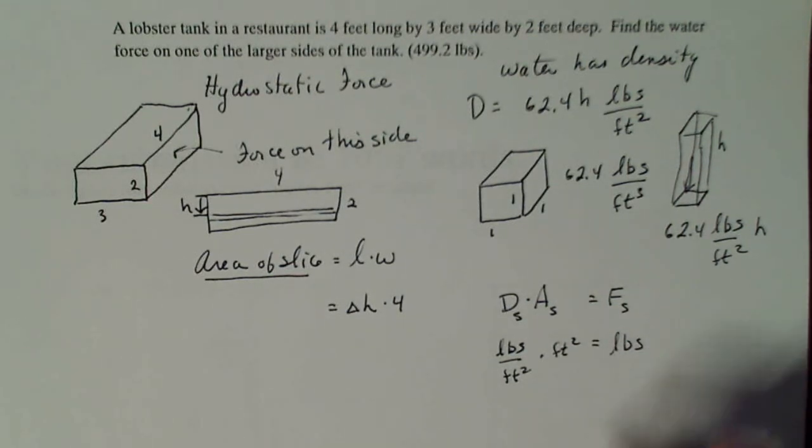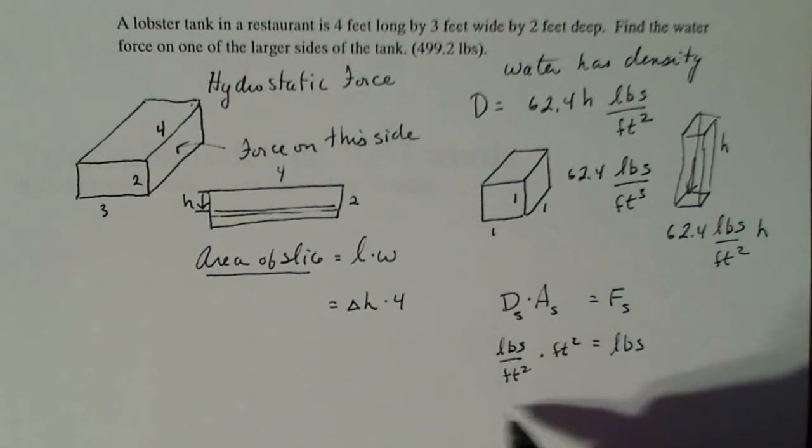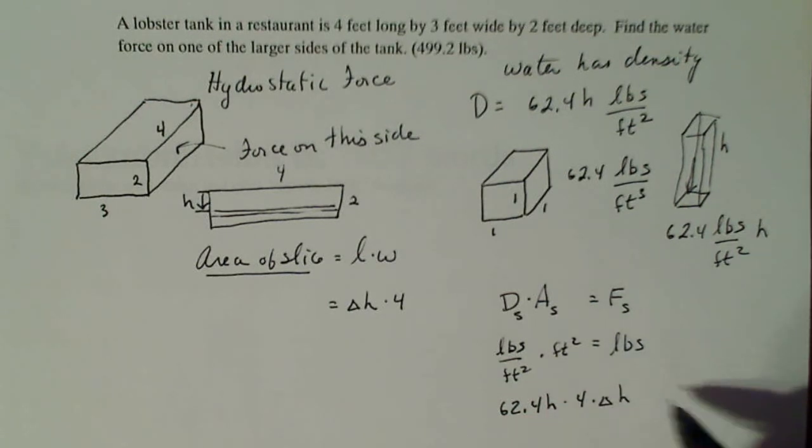So if I take everything that I have now, my density is 62.4 H. My area is four times delta H. That's going to give me my force on my slice, which is exactly what I want.